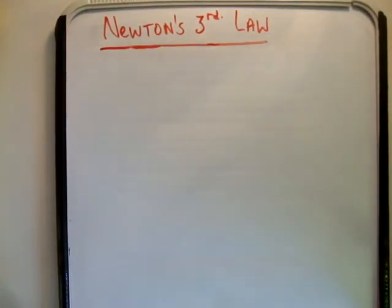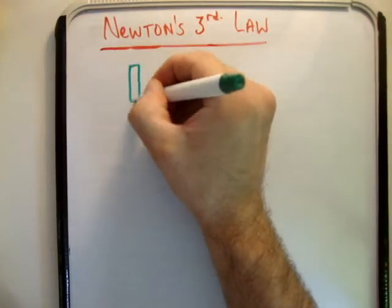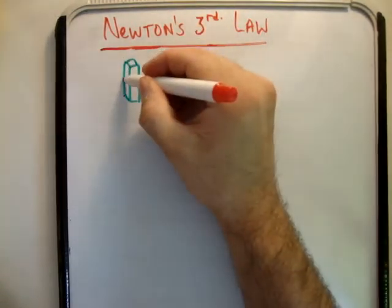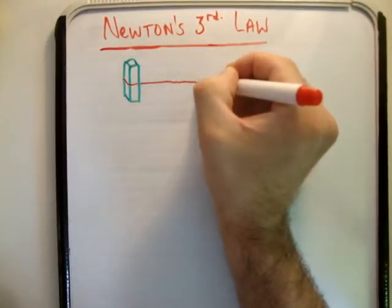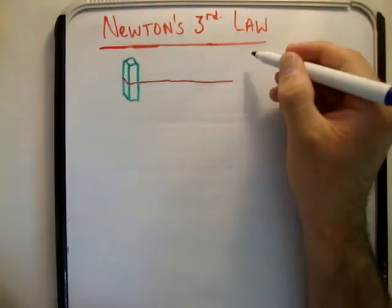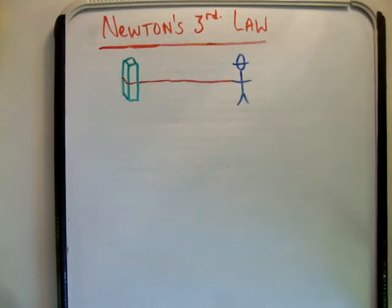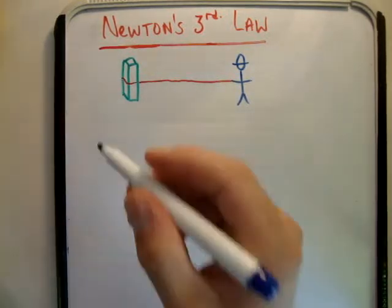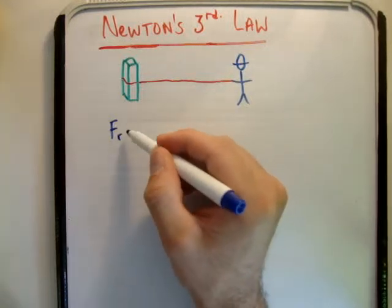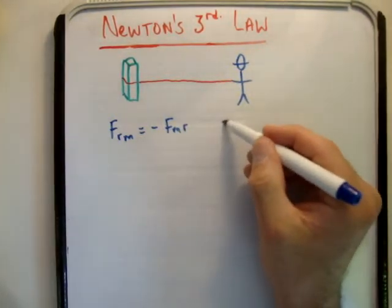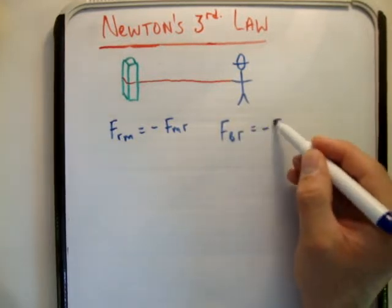I want to imagine the following scenario. You have a block — a big, heavy block. Attached to the block you have a rope, and attached to the rope you have a man. The man is pulling the block. What are the action-reaction pairs? What are the Newton's Third Law pairs? We can say that the force of the rope on the man is equal to negative the force of the man on the rope. And also, the force of the block on the rope is equal to negative the force of the rope on the block.